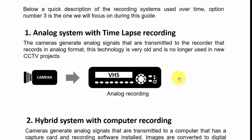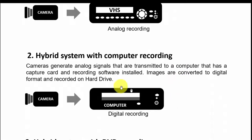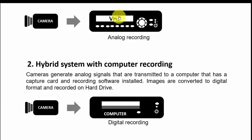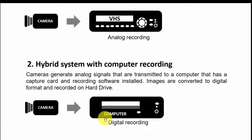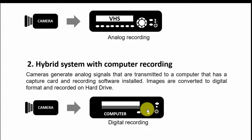With the evolution we came to another technology: the hybrid system with computer recording. Here I'm replacing the VHS with a computer. It's still an analog camera using analog cables, but now the computer can convert the analog signal to digital and record on a hard drive. You can also connect a monitor and see the image live from the camera directly on your computer.